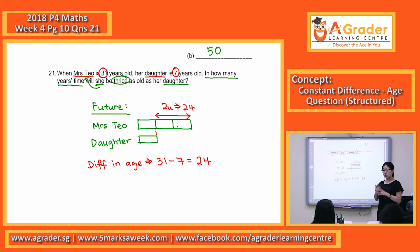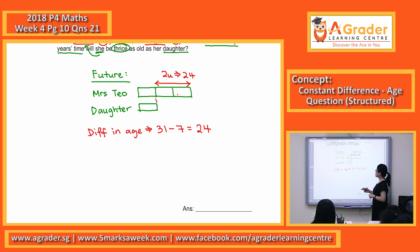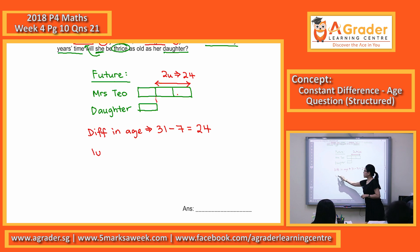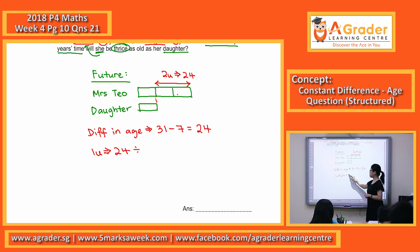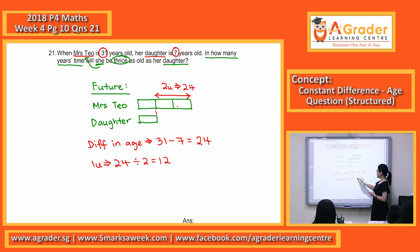So if two units is 24, what do we have now? Two units is 24, so one unit is 12. To get our one unit, 24 divided by 2 is 12. This 12 here — the one unit represents the daughter's age in the future.